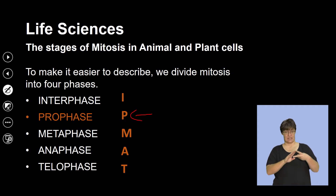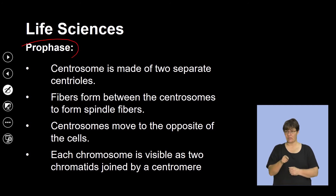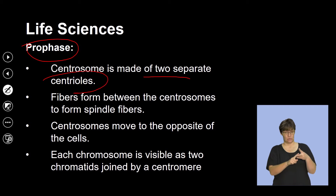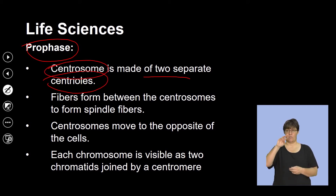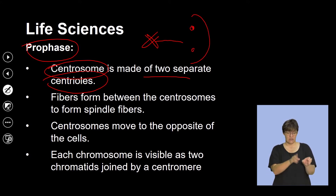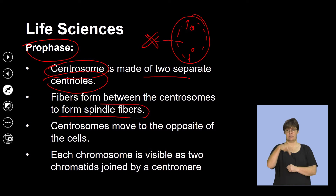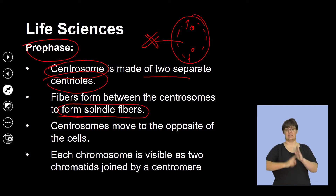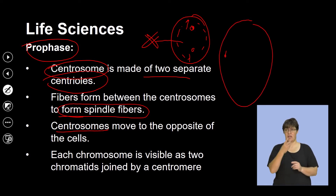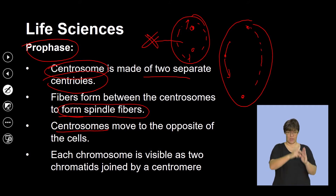Let's look at the next phase: prophase, the first phase of the actual process of mitosis. In prophase, the centrosome splits into two separate centrioles, which move to the opposite ends of the cell. From these, structures called spindle fibers develop. The centrosomes move to the opposite poles of the cell, and spindle fibers — cytoplasmic threads — connect the opposite centrosomes to each other.